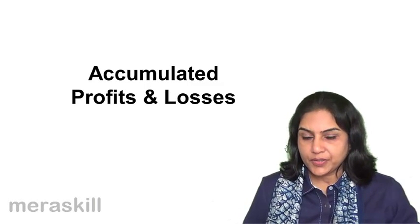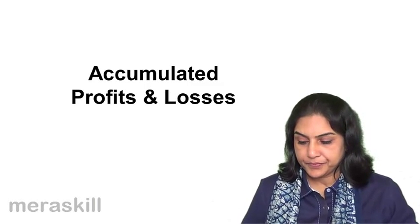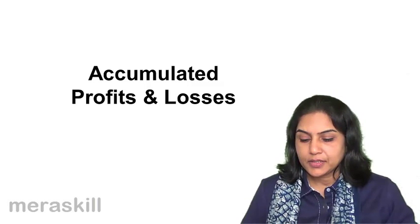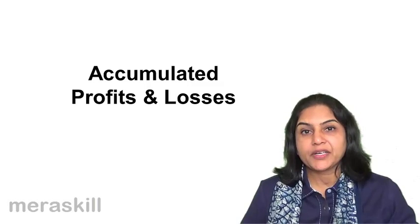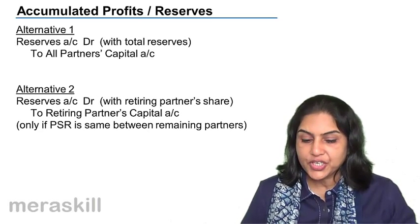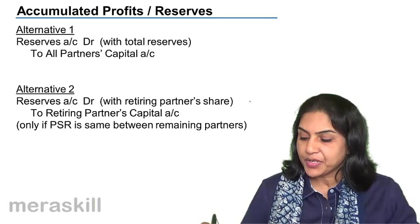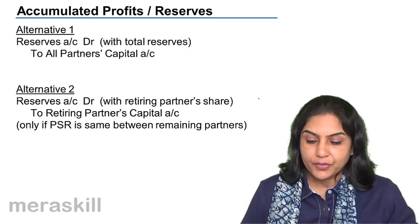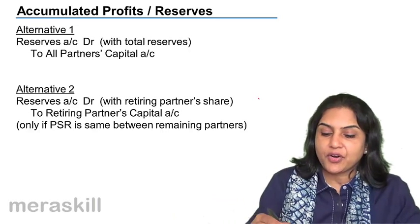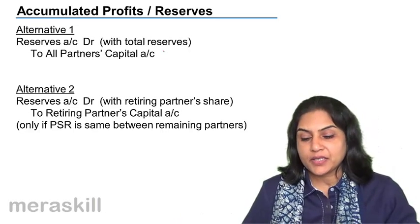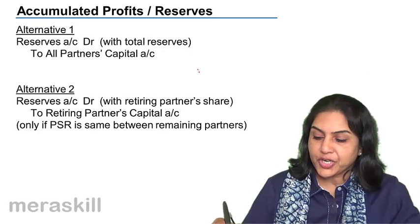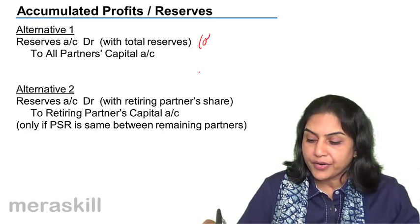Accumulated profits and losses — the adjustment is exactly the same as what we did in the case of admission of a partner. Reserves account is debited to all partners' capital accounts in their old profit sharing ratio.